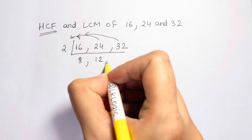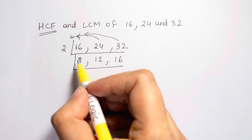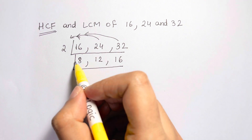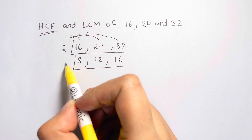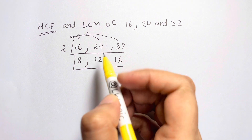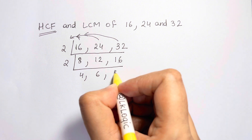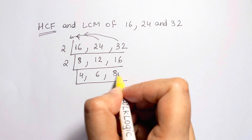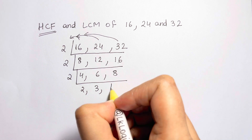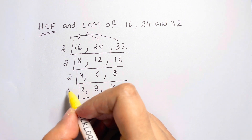Continue the ladder. Are 8, 12, and 16 all divisible by 2? Yes: 2×4=8, 2×6=12, 2×8=16. Are 4, 6, and 8 again divisible by 2? Yes: 2×2=4, 2×3=6, 2×4=8. Now we have 2, 3, and 4.